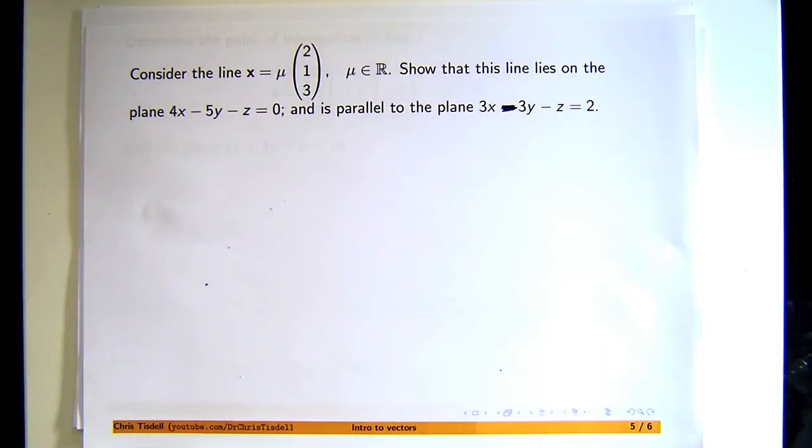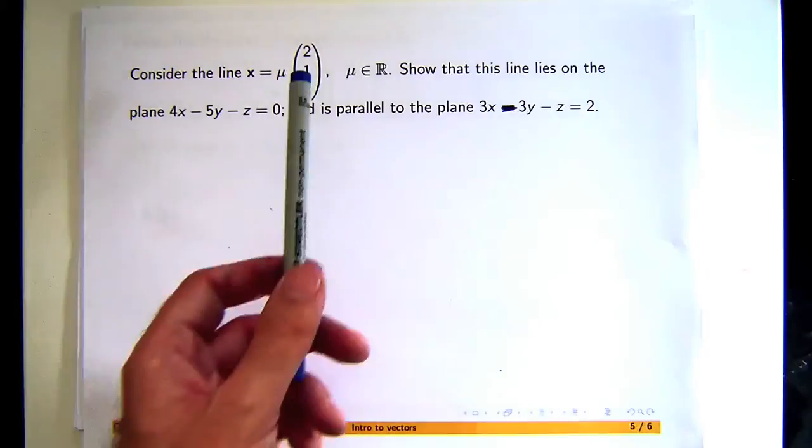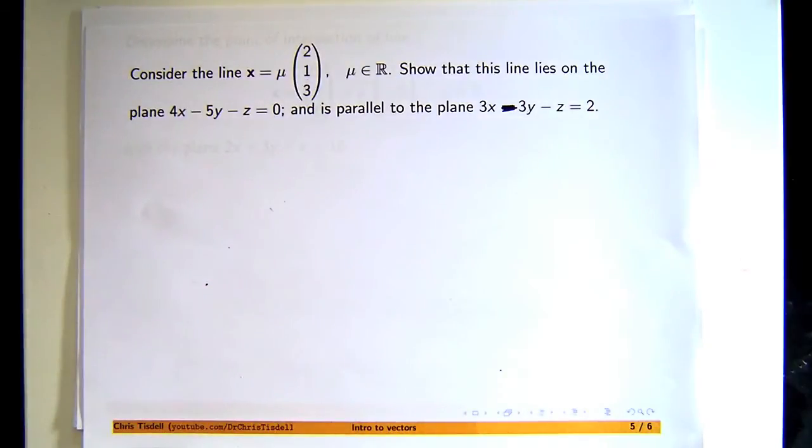Here we have a question involving lines and planes. We're given a line up here. Here mu is the parameter or the variable, and this line is sitting in three-dimensional space.